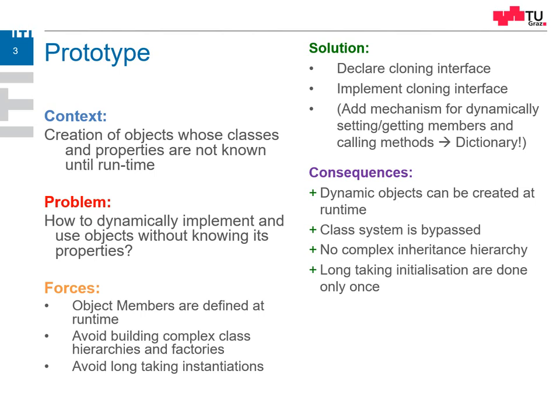Long-taking initializations are only done once. If we create a new prototype, it's only created once and afterwards copied. If we create so many prototypes on the fly and store them in a list, we have to have some kind of registry where we store our prototypes in order to recall and use them again later on.